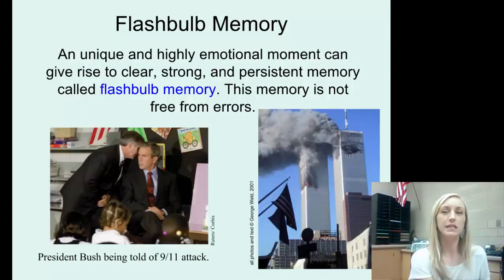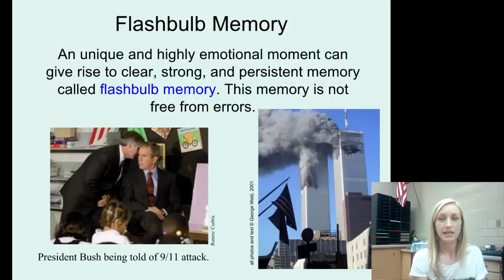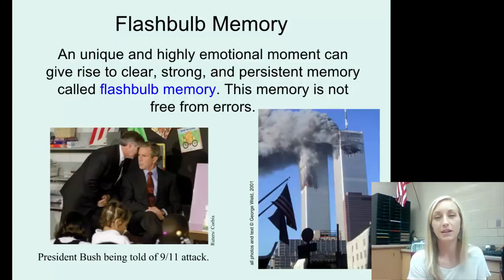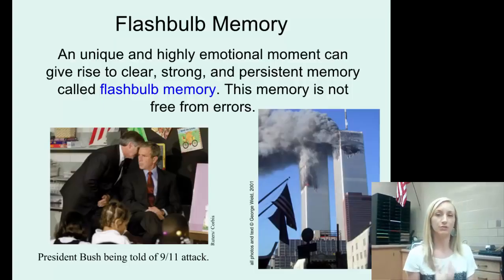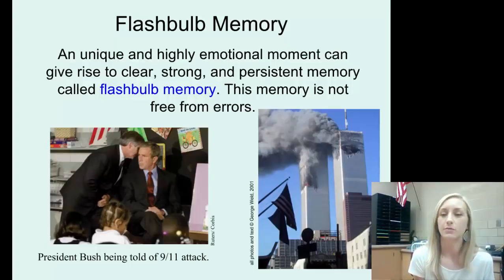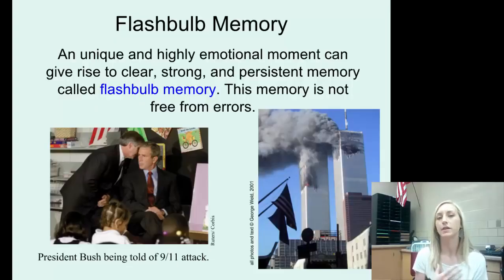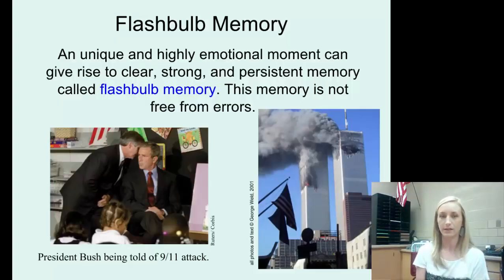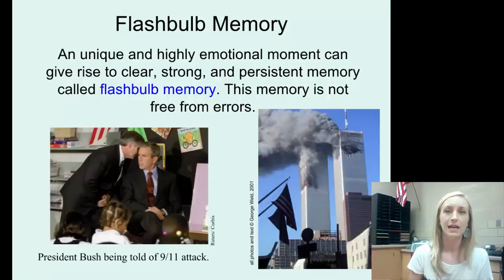One type of memory is a flashbulb memory — a unique and highly emotional moment that gives rise to clear, strong, and persistent memory. Flashbulb memories are not free from errors; they are very likely to be wrong because they are so emotional and not necessarily objective. September 11th is a flashbulb memory for my generation, and JFK's assassination or Martin Luther King Jr.'s death for older generations. We can also have very individual flashbulb memories, like a traumatic personal event that brings on strong emotion because the memory is so vivid.